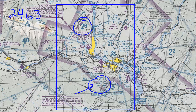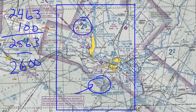Since this is a man-made obstacle, we're going to add 100 feet to the original elevation, giving us 2,563 feet. Next, we round up to the nearest 100, which gives us 2,600 feet — matching the Maximum Elevation Figure for this area.